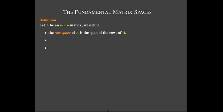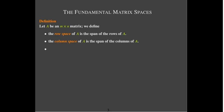We're going to start with a matrix that has n columns and m rows. We'll define the row space to be the span of the rows of A. The column space is going to be the span of the columns of A. The null space is the set of all solutions to the homogeneous equation Ax equals 0.